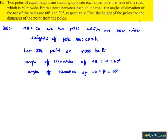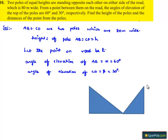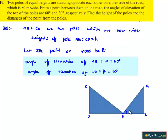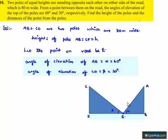Let us represent the above information in the form of a figure. Here AB and CD are two poles, E is the point on the road, alpha is 60 degrees and beta is 30 degrees. The width of the road BD is 80 meters and the height of the poles is assumed to be H meters.